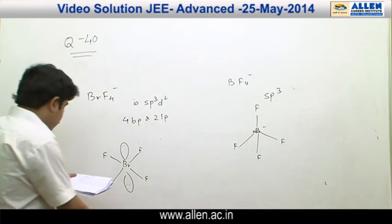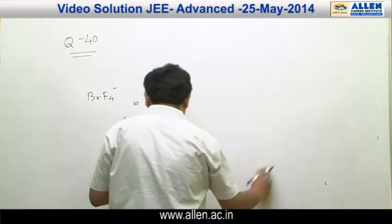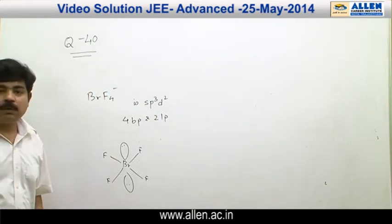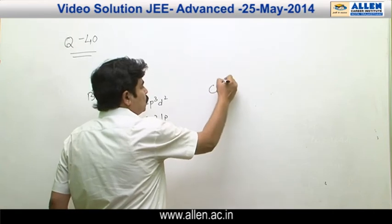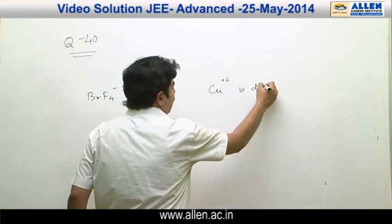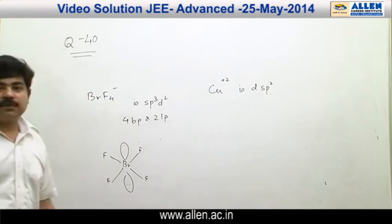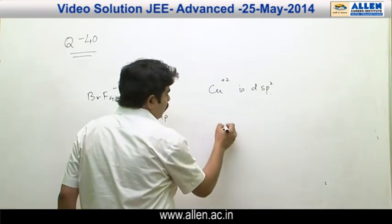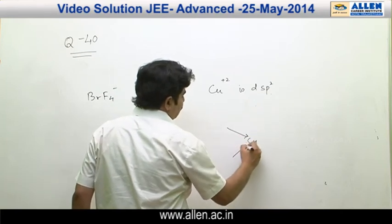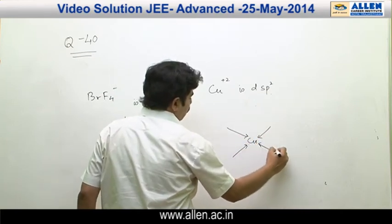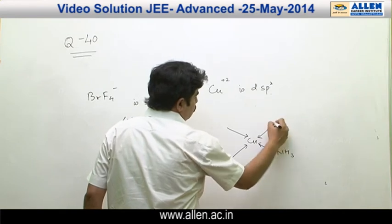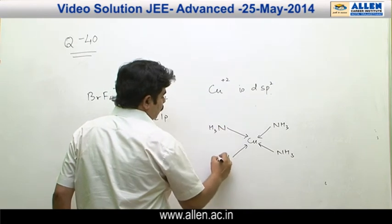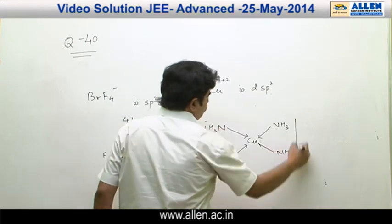Another option is [Cu(NS₃)₄]²⁺. In this complex, the hybridization of Cu²⁺ is dsp², due to the transference of electrons. Therefore, the shape of [Cu(NS₃)₄]²⁺ is square planar.